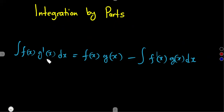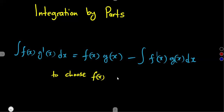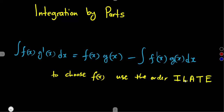To choose f(x) — that is the function whose derivative we will determine — we are going to use this order: use the order ILATE. I'm just going to write it in short as ILATE. So, what is this order ILATE that we are referring to? What does it actually stand for?